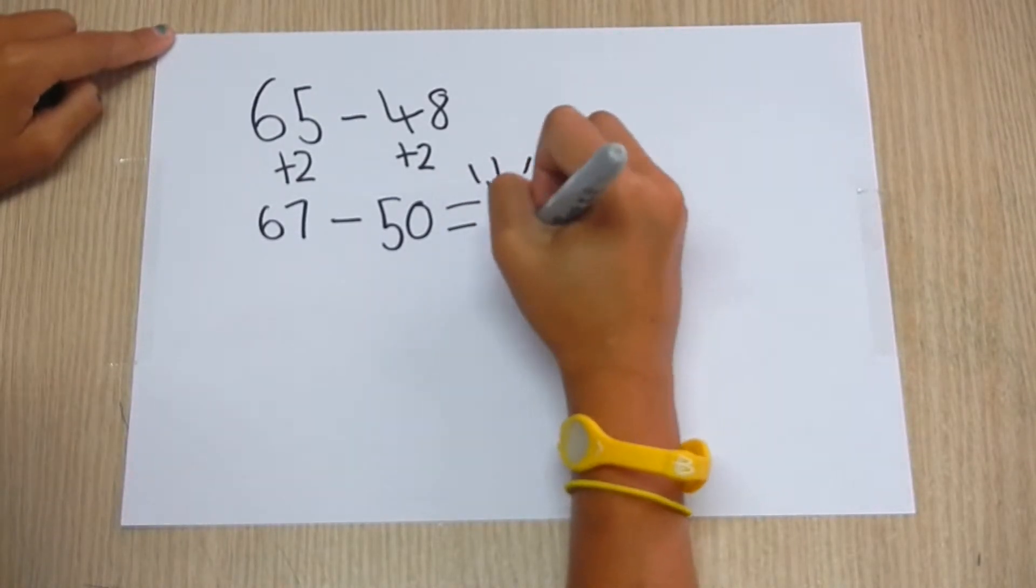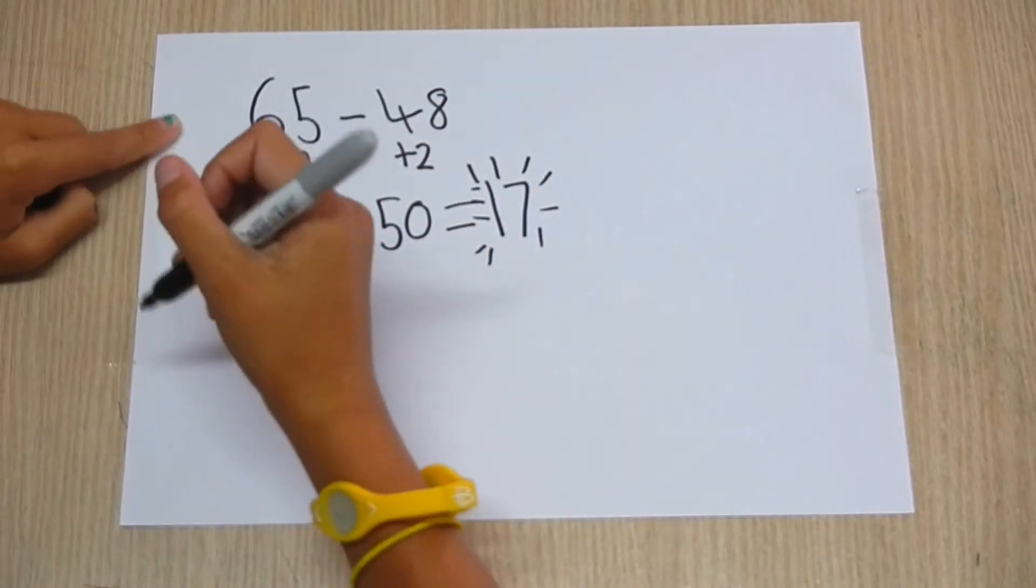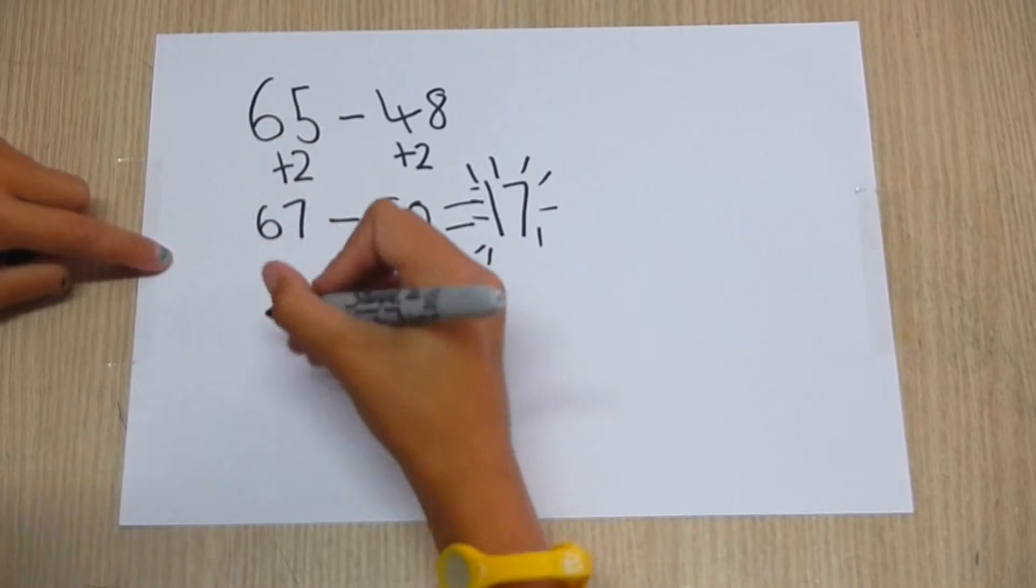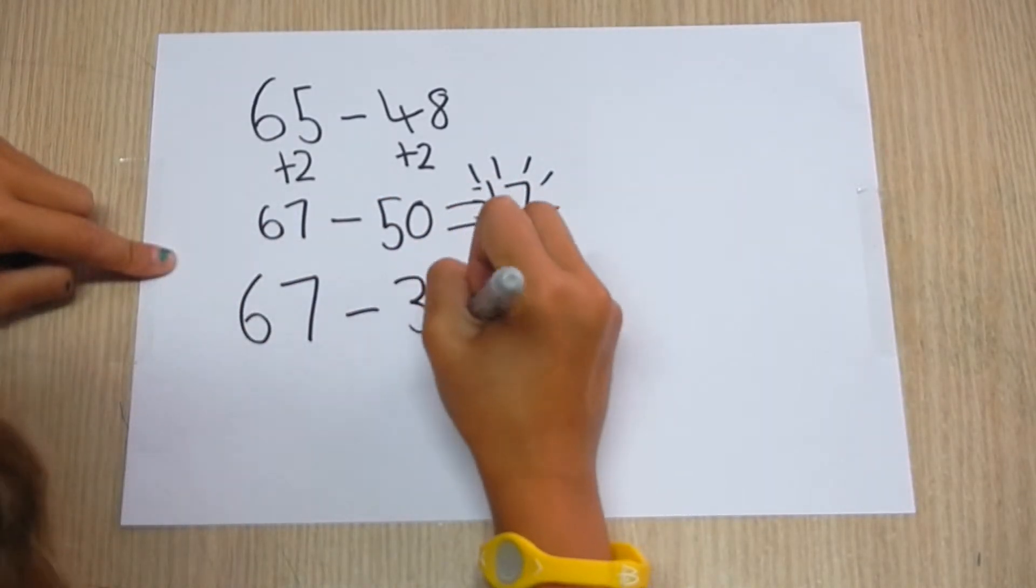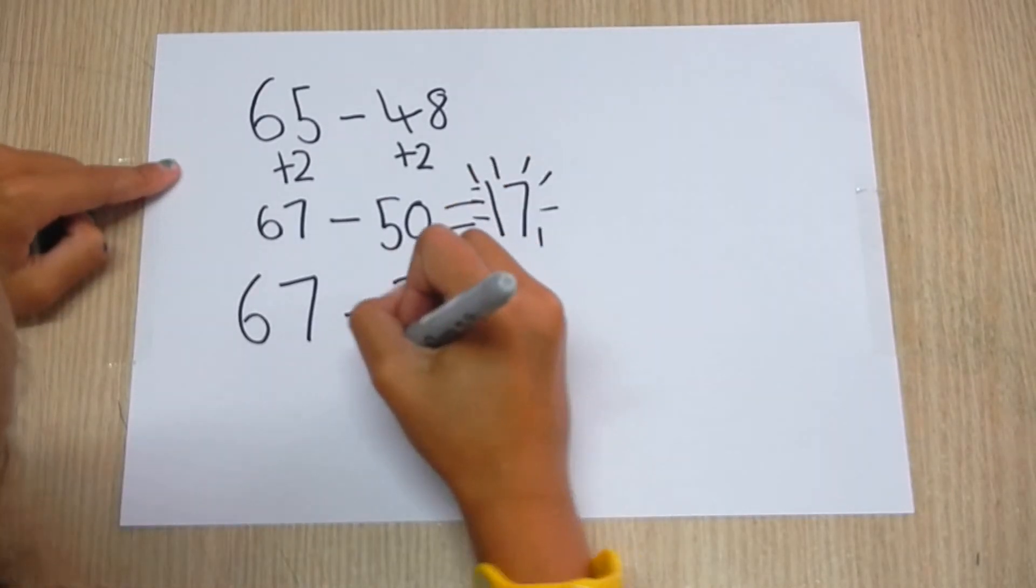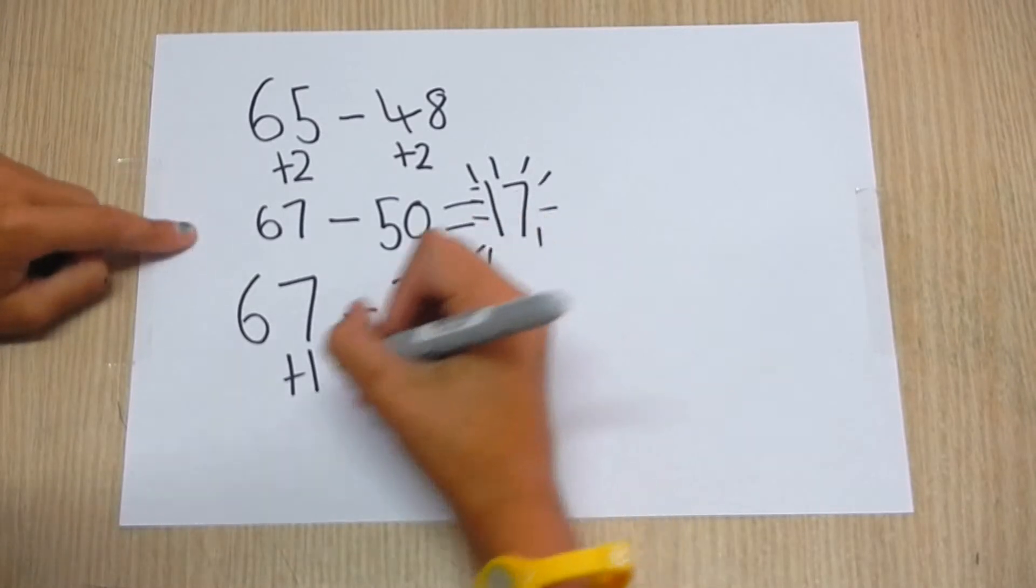Let's do another one. 67 take away 39. You add 1 to 67 and 1 to 39 so 39 is a tidy number.